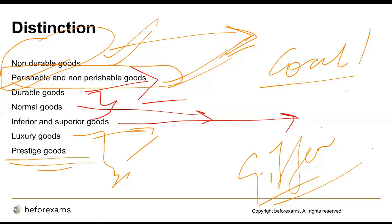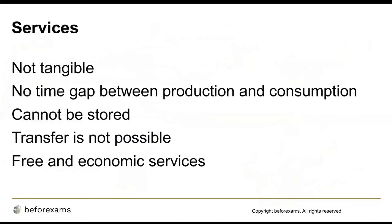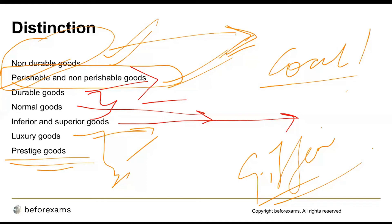Prestige goods are goods that describe high status and value — like antique collections and limited edition goods. They add to the value and are always bought by the richest section of people. Complementary goods are also an important kind: when one good's demand increases, the price of the complementary good decreases, giving it a negative cross-elasticity of demand — like pencil and eraser.